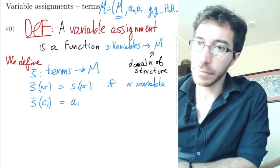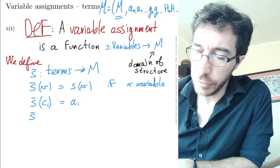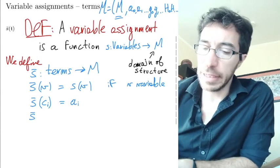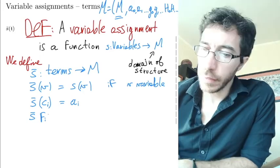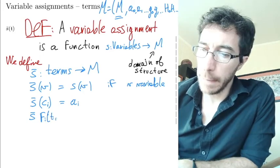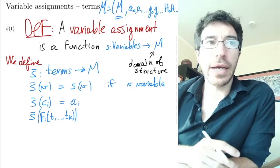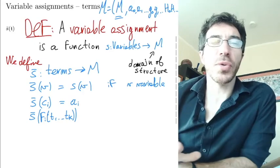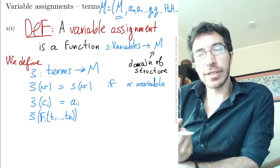And if we have s bar of a more complicated term that now involves function symbol fi of a bunch of terms t1 up to tk, we're assuming s bar by recursion. So we can assume we already know the value of s bar on the smaller terms and we use that.